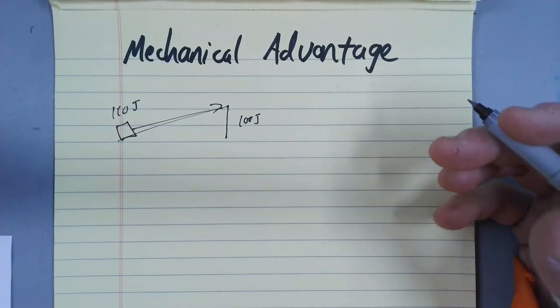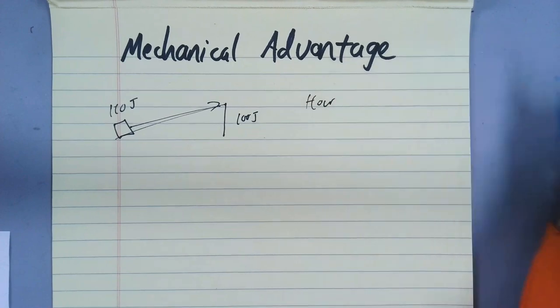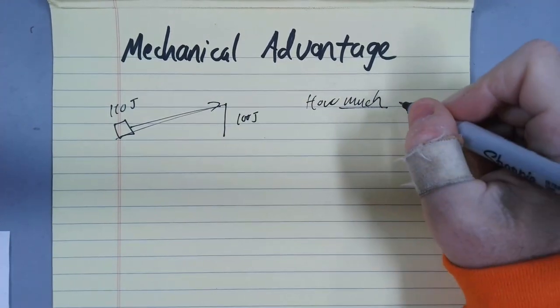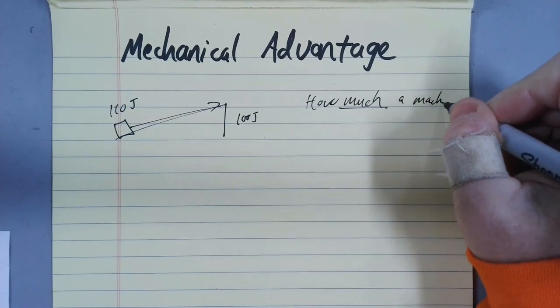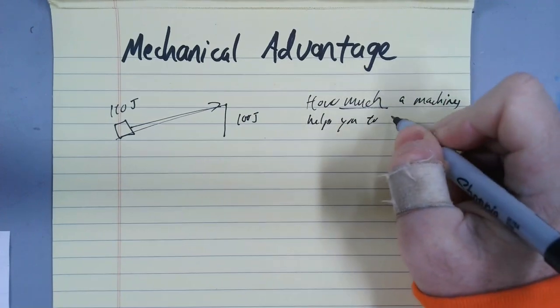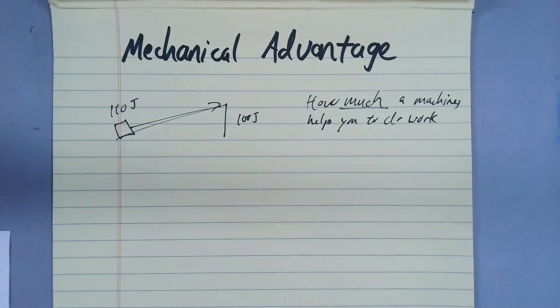Mechanical advantage is going to be a number. It's going to be a calculation. And it's basically a way to quantify how much, in other words, a number, an actual quantity, a machine helps you to do work. Because that's why we use machines. We need some help getting the job done. And some machines help more than others. Or different arrangements of one particular machine can help you more or less.